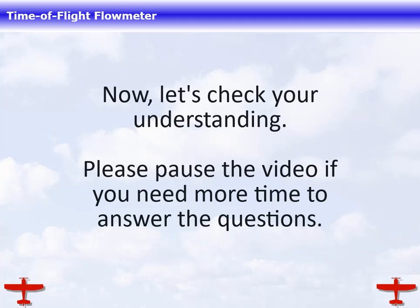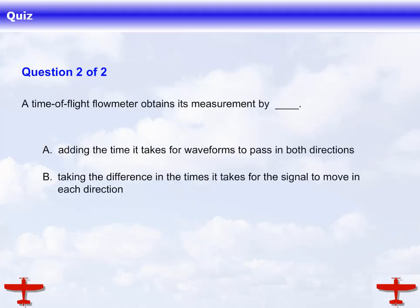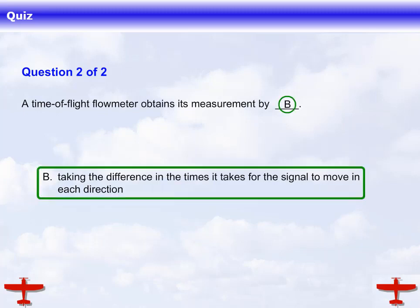Now, let's check your understanding. Please pause the video if you need more time to answer the questions. Sound waves are accelerated when they travel in the same direction as the fluid they are passing through. A time-of-flight flow meter obtains its measurements by taking the difference in the time it takes for the signal to move in each direction.